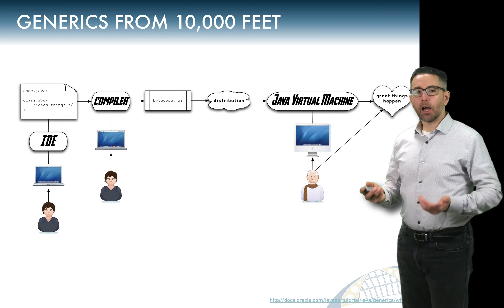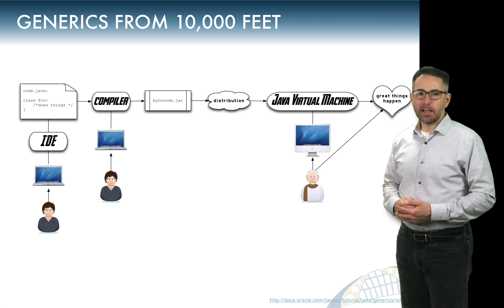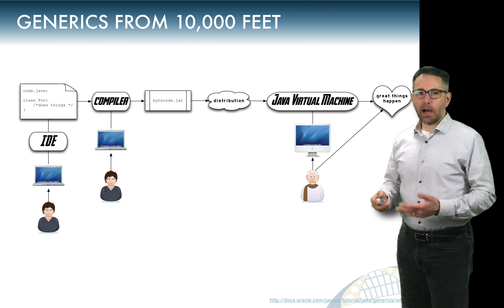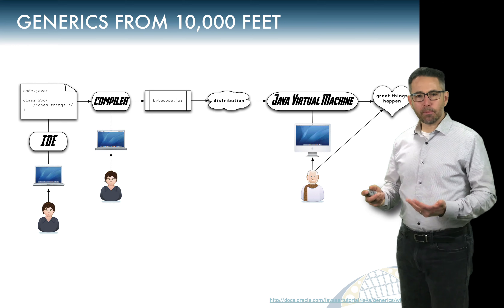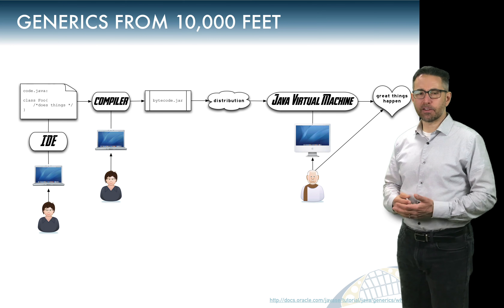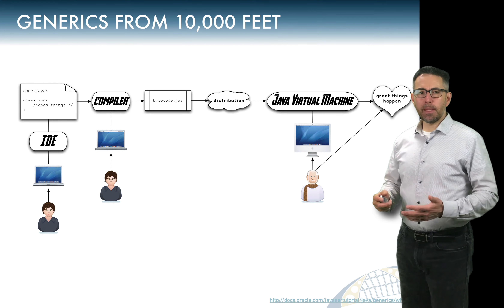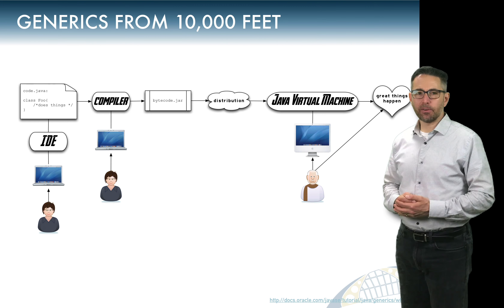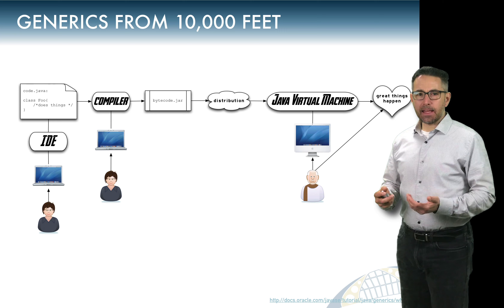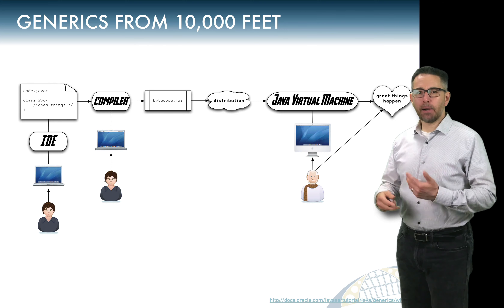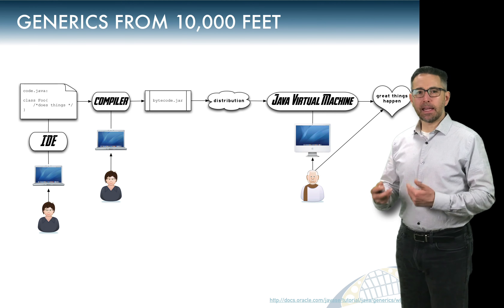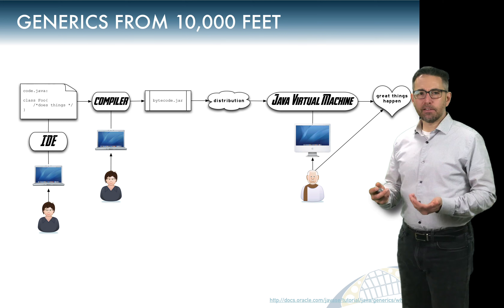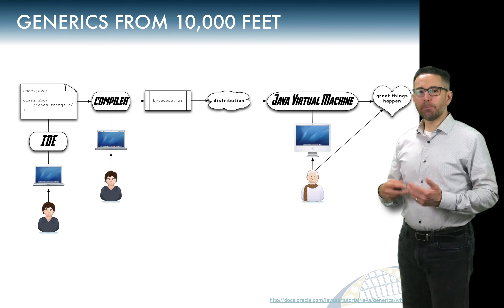Let me give you an example of how a good development process works. A developer — representing a team — is working at an IDE, writing source code. If you're working in a good IDE, that code is constantly being compiled on the fly, identifying bugs at compile time through static type checking. Eventually the developer team feels good about it and packages up the code.